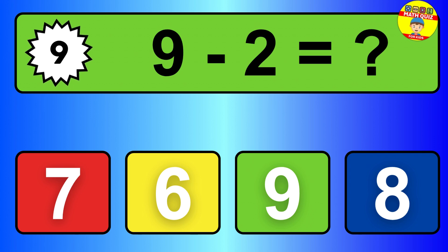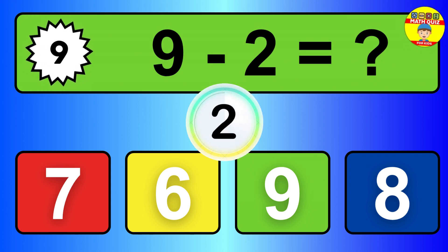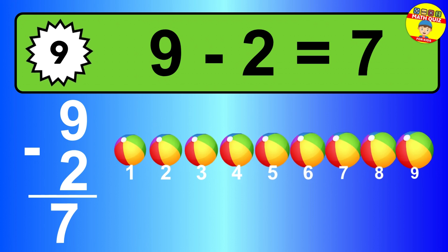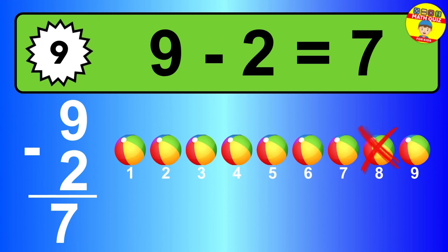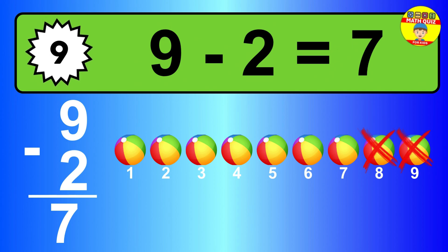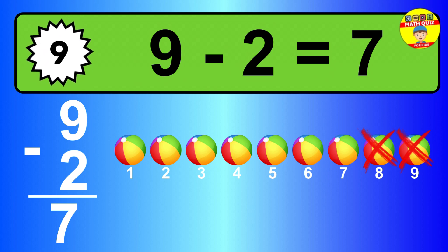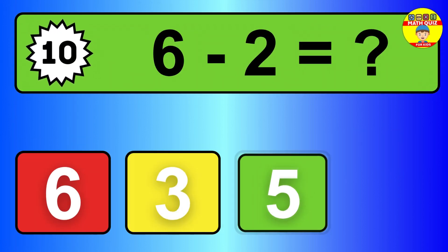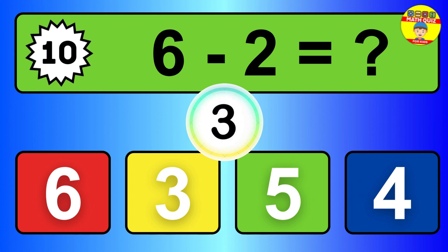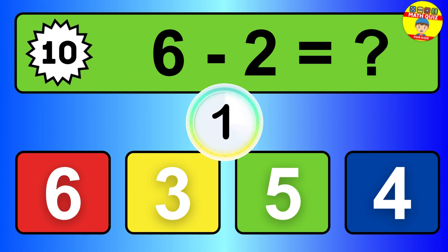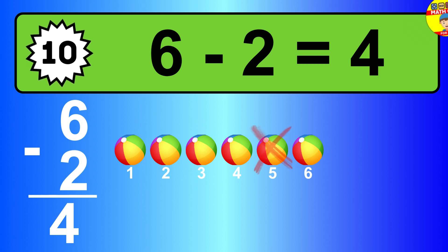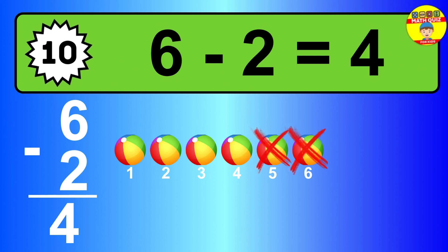Question nine. Nine minus two equals what? So the answer is nine minus two is seven. Let's count it. One, two, three, four, five, six, seven. Question ten. Six minus two equals what? So the answer is six minus two is four. Let's count it. One, two, three, four.